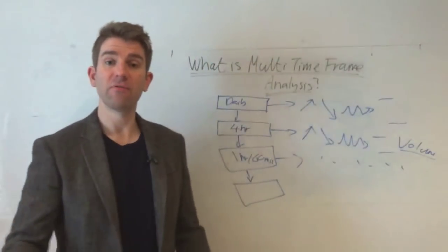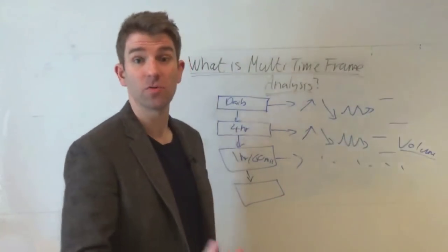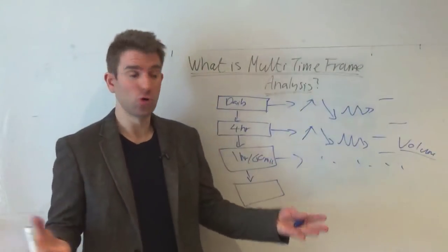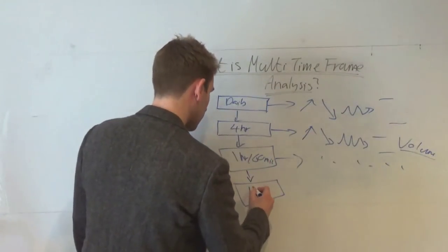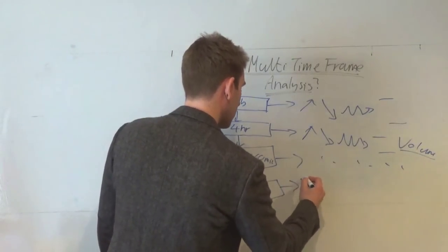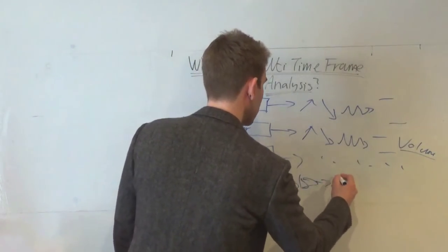And the idea is we're working our way down to the time frame that we're making our trading decision on. So let's say we're even a day trader and we're trading off a one-minute chart. We're going down now to a 15 and then we're going down to a five and then we're going down to a one.